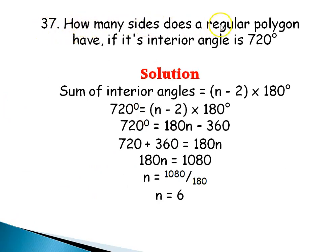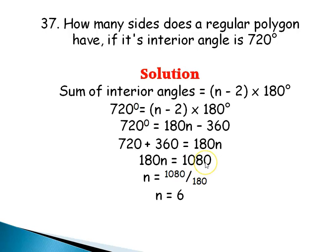Question 37: How many sides does a regular polygon have if its interior angle sum is 720 degrees? Using the formula (N − 2) × 180 = 720: expanding gives 180N − 360 = 720, so 180N = 720 + 360 = 1080. Dividing both sides by 180, N = 6. So this polygon has 6 sides.